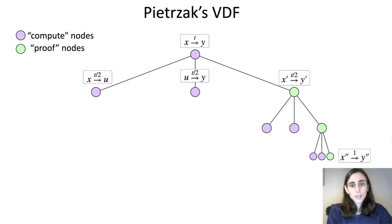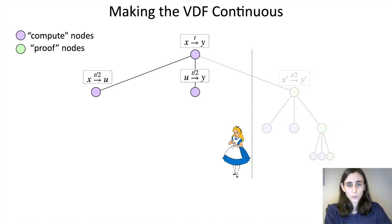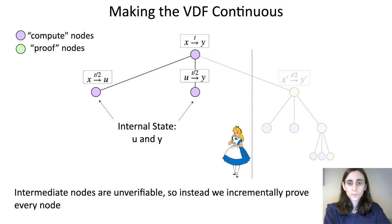So the reason this isn't already a continuous VDF is that the intermediate state is unverifiable. Where Alice is standing now, if you look at the work that the prover has done so far, it's computed u and y, but there's no way to verify it until it finishes the proof. And recall that we want every single intermediate state to be verifiable.